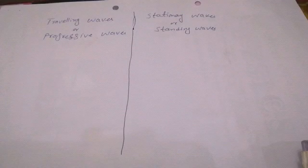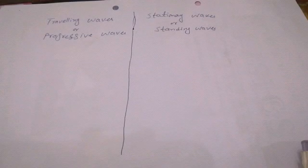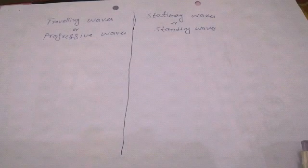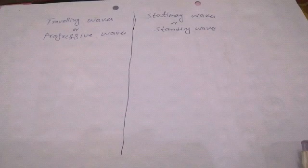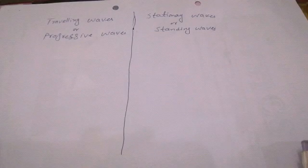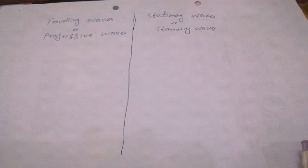For example, water waves. They are of two types: number one, transverse waves; number two, longitudinal waves. While stationary waves are those waves which are produced when two waves of the same frequency and same amplitude but traveling in opposite directions superpose. Stationary waves are also called standing waves.